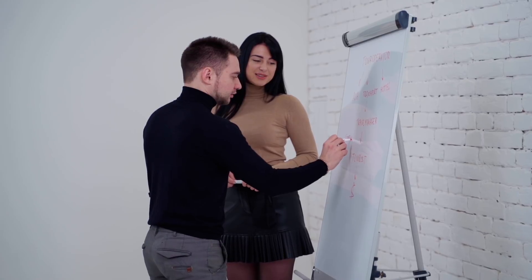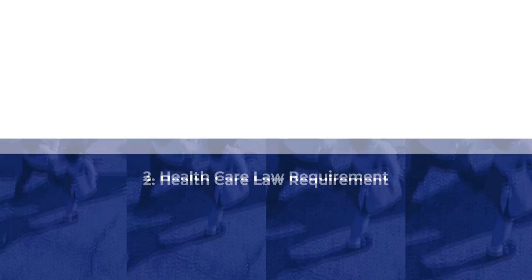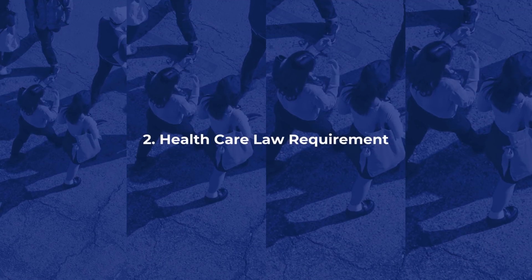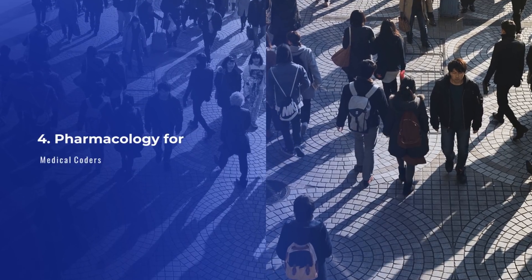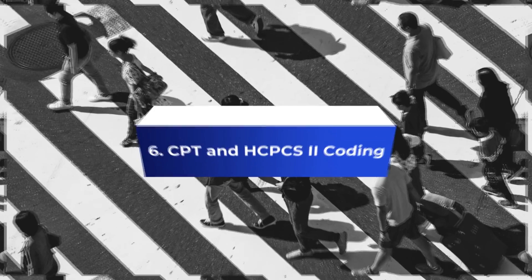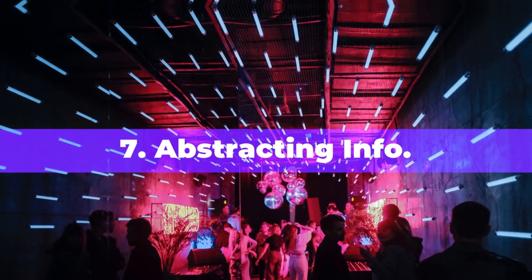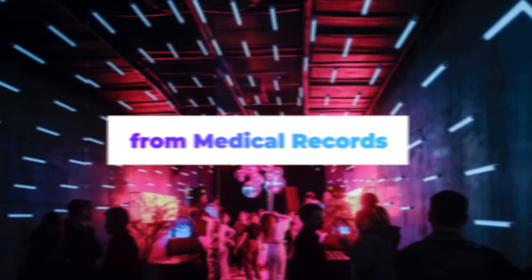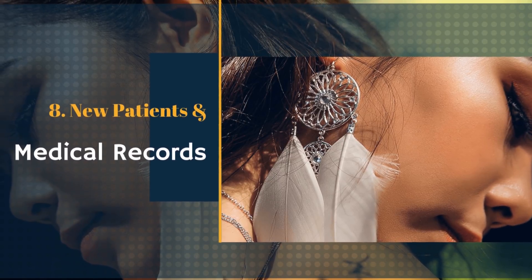This course is divided into the following lesson plan: 1. Introduction. 2. Healthcare law requirements to know. 3. Introduction to health insurance terms. 4. Pharmacology for coders. 5. ICD-10-CM Coding. 6. CPT and HCPCS Level 2 Coding. 7. Abstracting information from medical records. 8. New patients, insurance claims, and EOBs. 9. Medicare Parts A, B, C, and D.